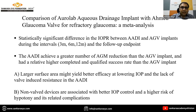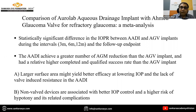The fibrous capsule around the end plate offers the major resistance to aqueous flow in these implants and helps maintain the anterior chamber. A meta-analysis comparing the Aurolab Aqueous Drainage Implant (ADI) with the Ahmed Glaucoma Valve (AGV) for refractory glaucoma found a statistically significant difference in IOP reduction between ADI and AGV at 6, 9, and 12 months. The ADI achieved greater anti-glaucoma medication reduction and a relatively higher complete and qualified success rate compared to AGV.